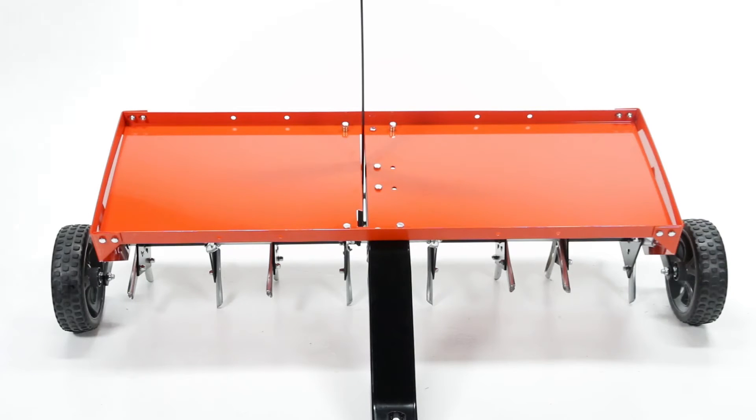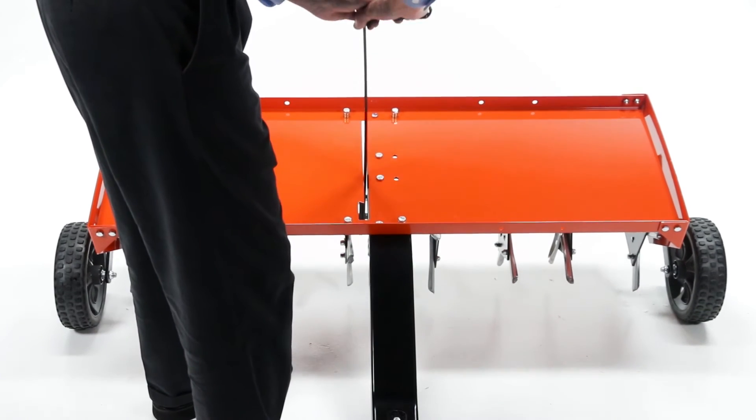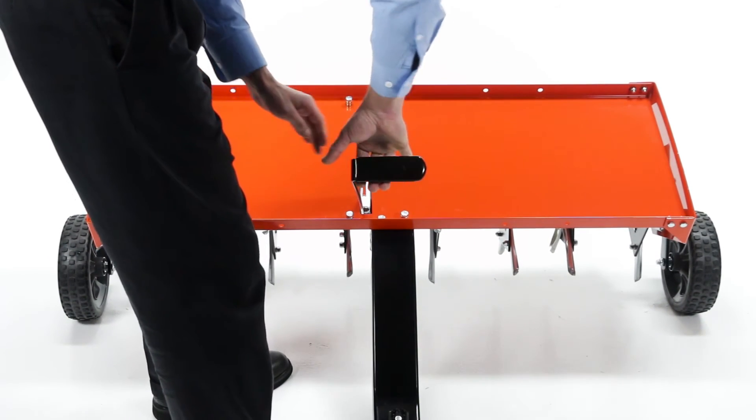First, turn the aerator upright. Then, place the lift handle into the transport locking notch at the front end of the slot in the tray.